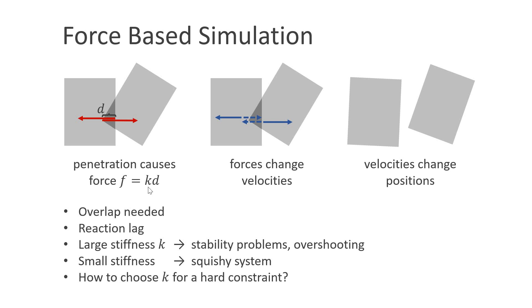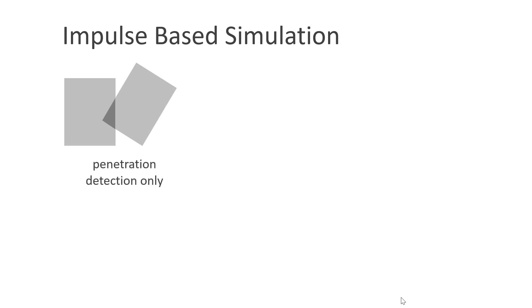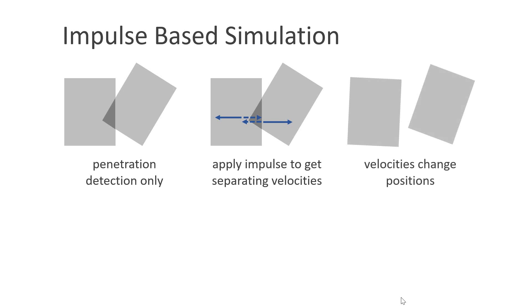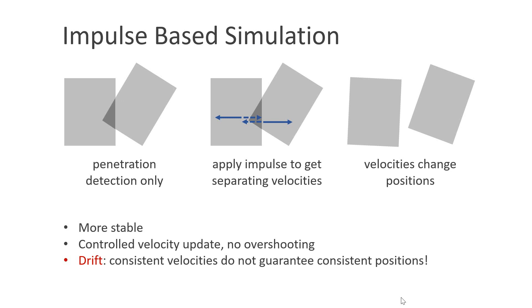A big problem is how to set k to simulate a hard constraint. As we will see in PBD, we work with compliance, which is the inverse of stiffness. For hard constraints, we can simply set it to zero, which corresponds to an infinitely big stiffness. Many rigid body engines use an impulse-based simulation. Here the penetrations are only detected, then an impulse is applied to make the velocities separating. When the new velocities are applied, the bodies separate. This approach is more stable — the velocity update is controlled and does not yield overshooting problems. The disadvantage is drift, because we only work with velocities. Consistent velocities do not guarantee consistent positions, and additional tricks are needed to fix this problem.